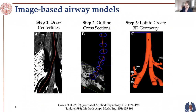We build our models from CT or MRI data — this example is from my PhD work based on MRI data, but typically when working with patients we use CT. We follow a pipeline where we draw centerlines, outline cross-sections, and loft them to create 3D geometries. We can also use region-growing methods, which is dependent on the type of images obtained. For asthma work we use 3D region growing to capture more remodeled airways, and it's faster especially when looking at a large patient population.